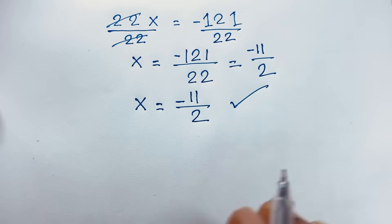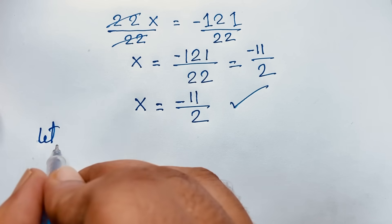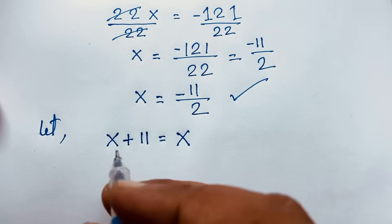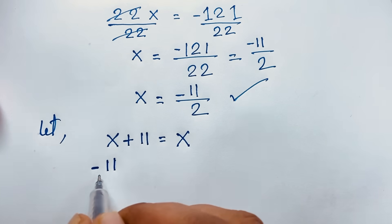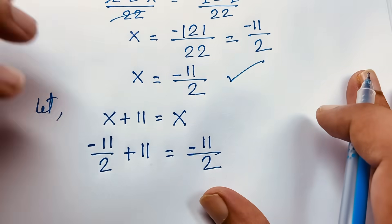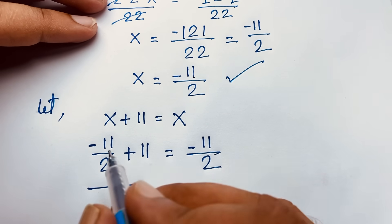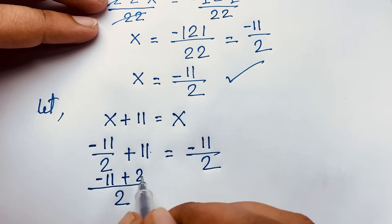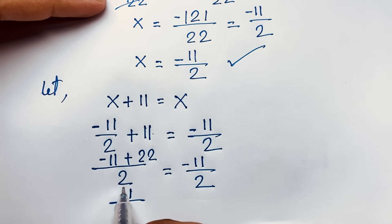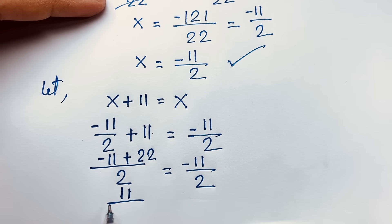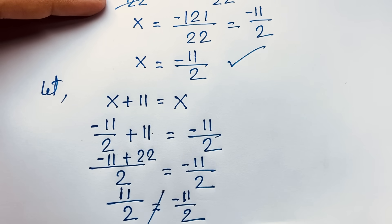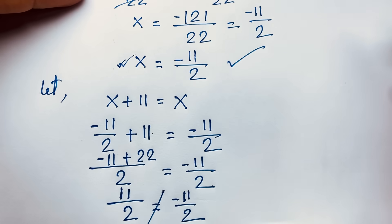This is our answer, but let's verify our question which is x plus 11 is equal to x. Here x is minus 11 over 2, so minus 11 over 2 plus 11 is equal to minus 11 over 2. The least common value is 2, so it will be minus 11 plus 22 over 2 is equal to minus 11 over 2. Then it will be positive 11 over 2 is equal to minus 11 over 2. Both sides are not equal, so this is not our answer. There is no real solution in this math problem.